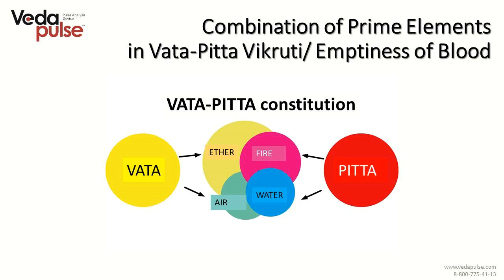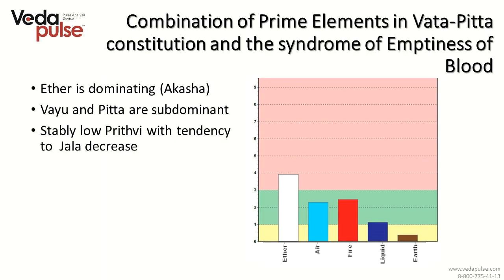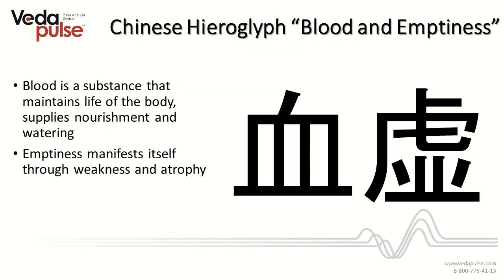After examination with the Vedapals program, the classical picture of the syndrome shows ether as dominant, with air and fire subdominant, and fire staying in the range of norm — so these people do not have a tendency to tichna agni. The first hieroglyph corresponding to emptiness of blood reminds one of the branches of vessels. Semantically it denotes a substance which maintains life and provides nourishment and moistening, so it is not literally the blood, but a wider notion including complicated processes. Another hieroglyph denotes emptiness.